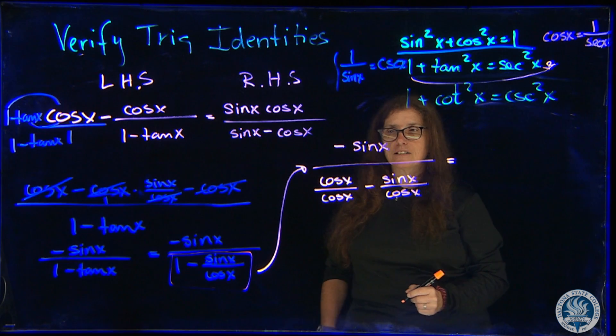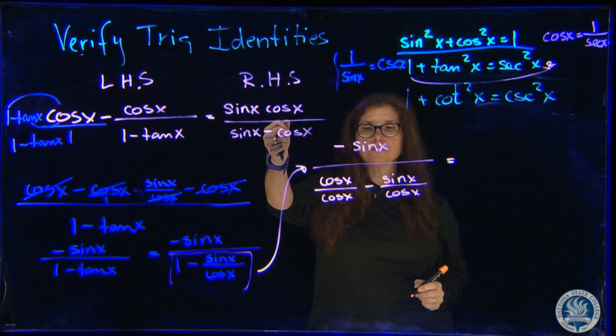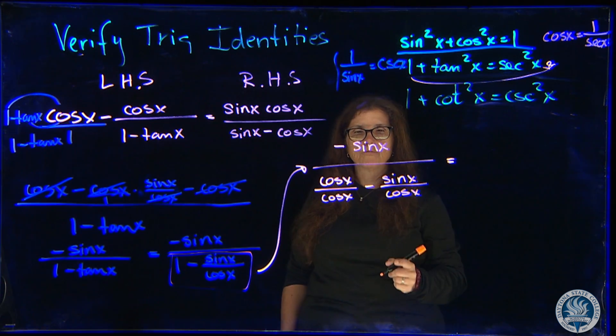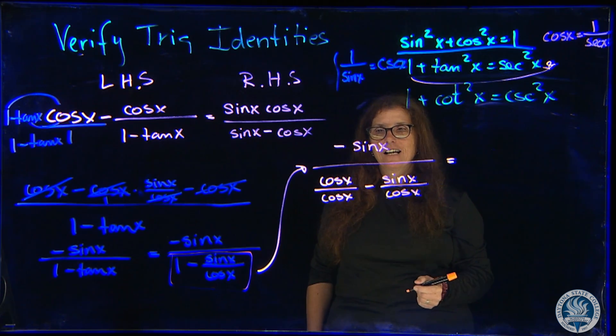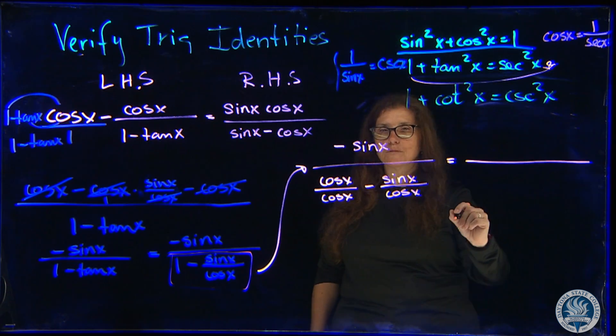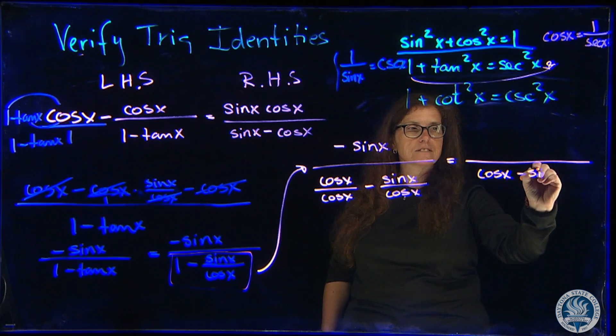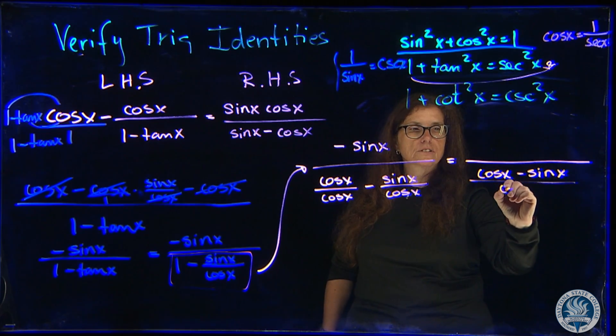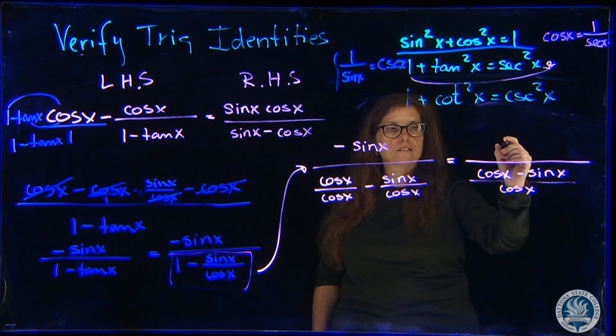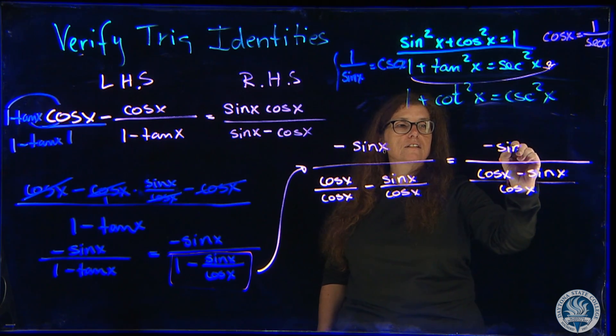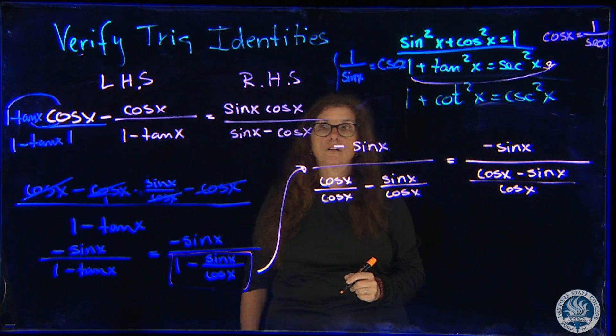Keep your right-hand side in mind because that's what we need to get to, and somehow I can see this happening. In the denominator we have cosine x minus sine of x all over cosine of x, and the numerator is minus the sine of x.